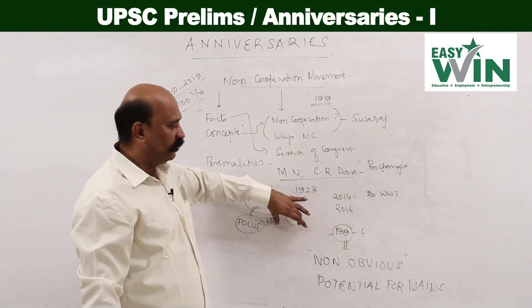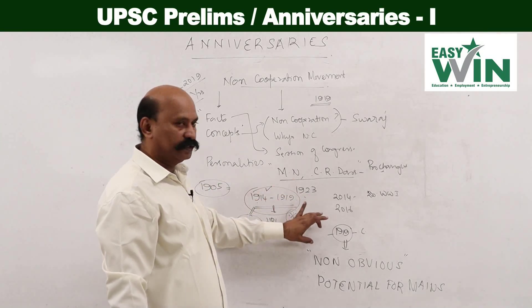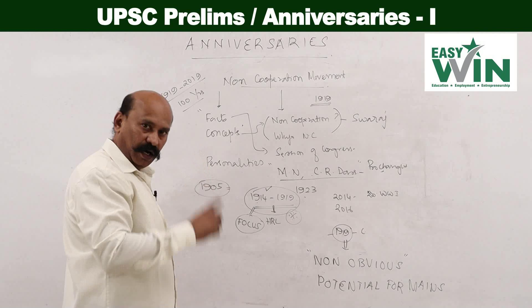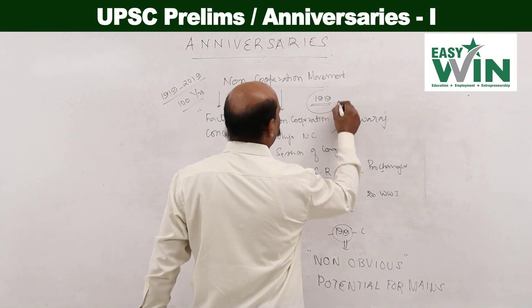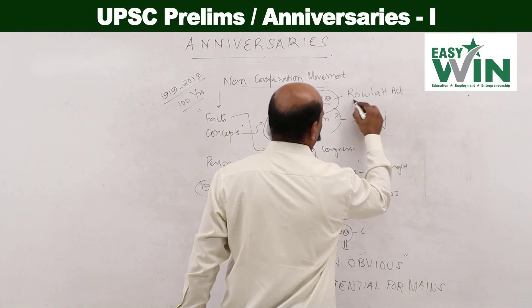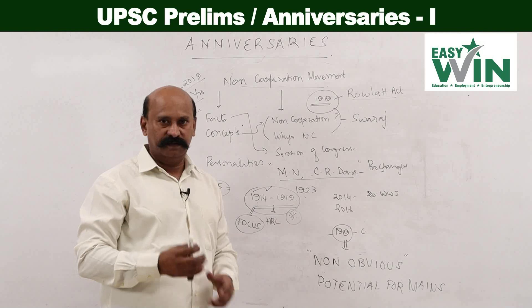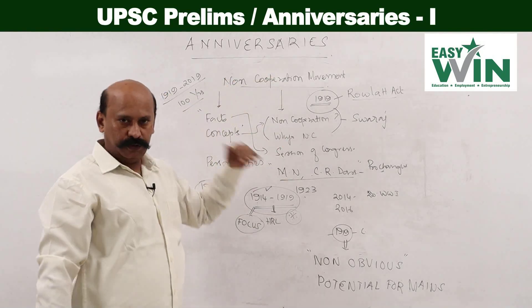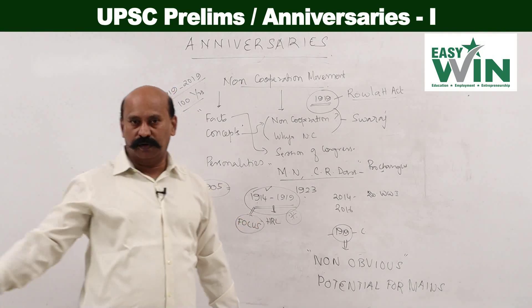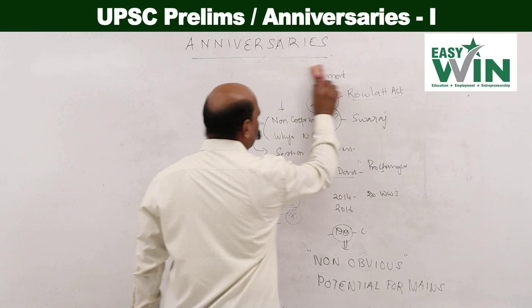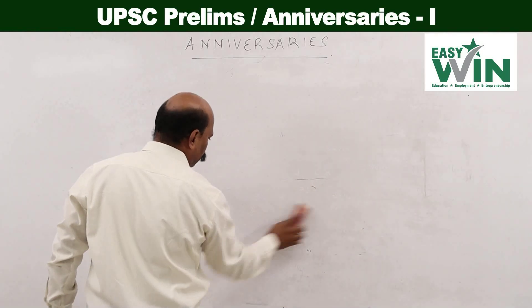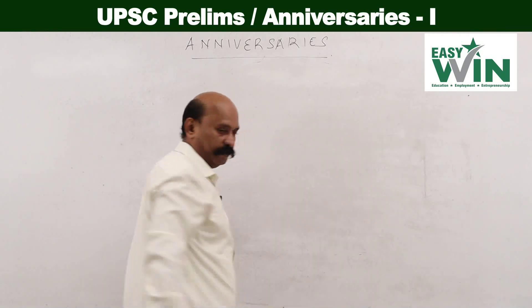Focus on events just before 1919 — what led to the non-cooperation movement — and also the consequences of the non-cooperation movement. Along with this, remember that immediately before the non-cooperation movement there was something called the Rowlatt Act. The Rowlatt Act is also relating to 1919 — in fact, the anti-Rowlatt Satyagraha was preceding the non-cooperation movement.